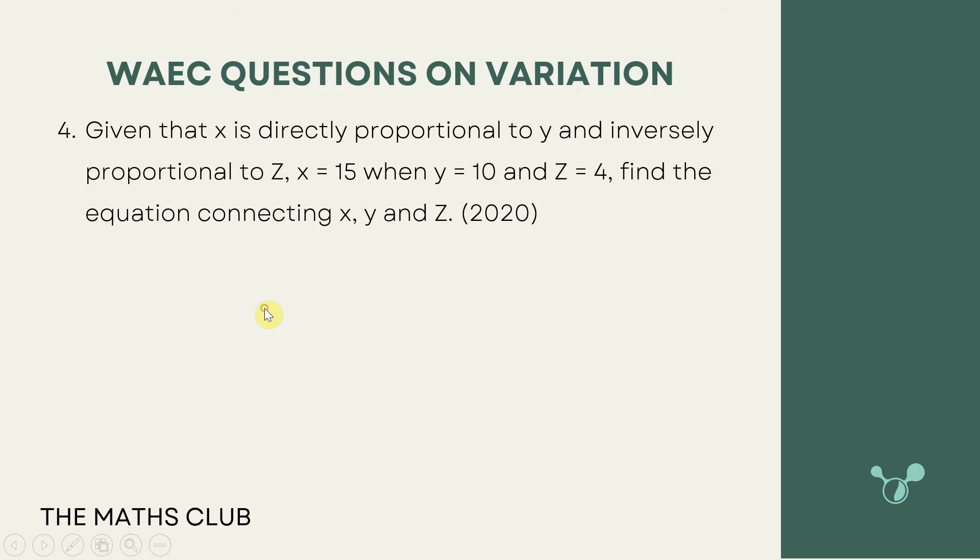The next question says: given that x is directly proportional to y and inversely proportional to z, x is equal to 15 when y is equal to 10 and z is equal to 4. Find the equation connecting x, y and z. This is from WASSCE 2020. Pause the video and try it out yourself.